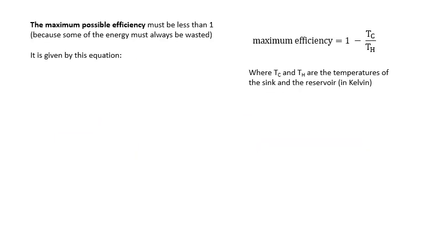And another expression you need to know is for the maximum possible efficiency. Now, obviously, the maximum possible efficiency can't be bigger than one, because that would mean that you're getting more energy out than you're putting in. It must always be less than one. And that basically means because some of the energy must always be wasted. And to work out the maximum efficiency, it's one minus TC over TH.